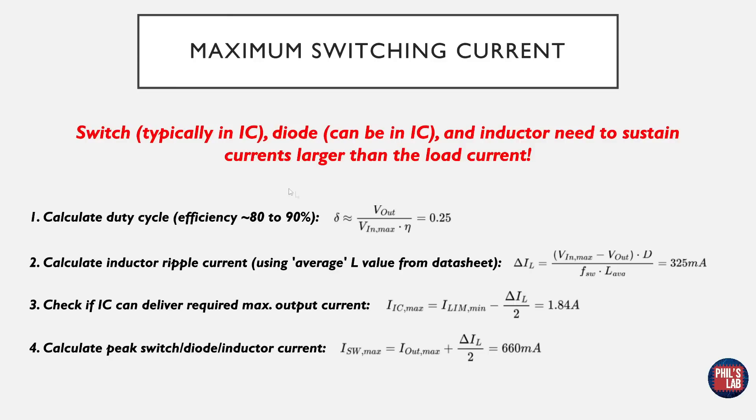The first part of this calculation is calculating the duty cycle. Remember, the duty cycle relates effectively the input voltage to the output voltage. The duty cycle is approximately the output voltage divided by the input voltage, the maximum input voltage, and divided by the efficiency. So in our case, that would be 3.3 volts divided by 16.8 volts divided by an efficiency of somewhere between 80 to 90 percent. It isn't entirely critical, something in the ballpark, and you can usually get this from the datasheet. So we get a duty cycle of about 0.25.